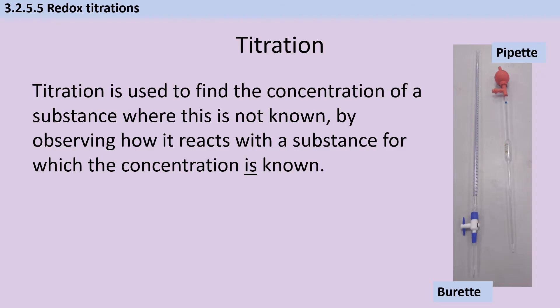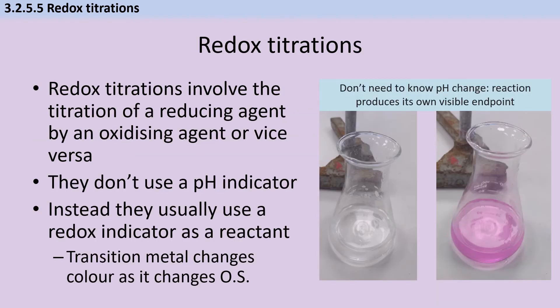Titration is an analytical technique where we use the concentration of one substance which we do know to work out the concentration of a second substance which we don't. Unlike an acid-base titration, a redox titration doesn't require adding a pH indicator because these titrations are self-indicating. We're adding either a reducing agent or an oxidizing agent, and based on the oxidation state of the transition metal present, as it changes oxidation state it changes color, so the reaction self-indicates.